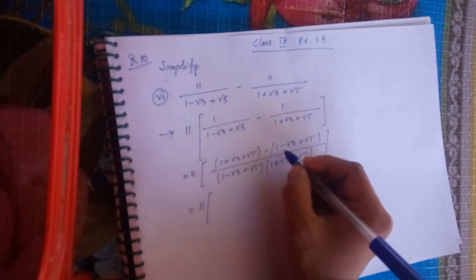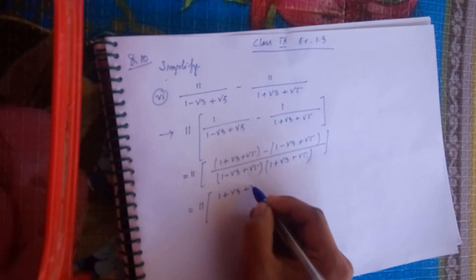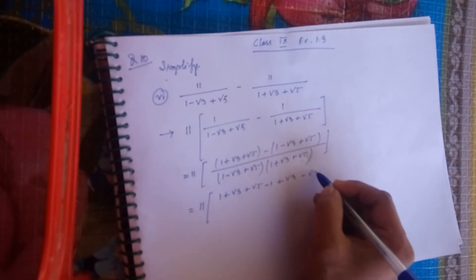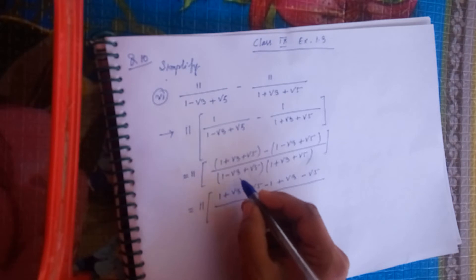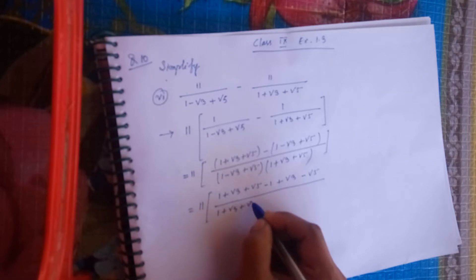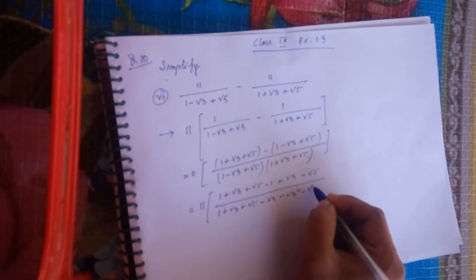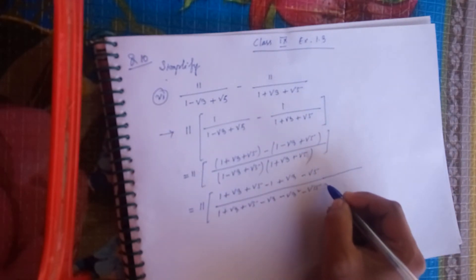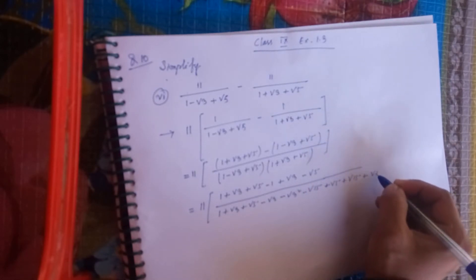We get: 1 plus root 3 plus root 5 minus 1 plus root 3 minus root 5. Expanding the numerator: 1 plus root 3 plus root 5 minus root 3 minus root 3 squared minus root 15, plus root 5 plus root 15 plus root 5 squared.